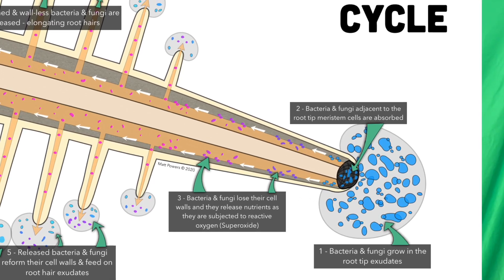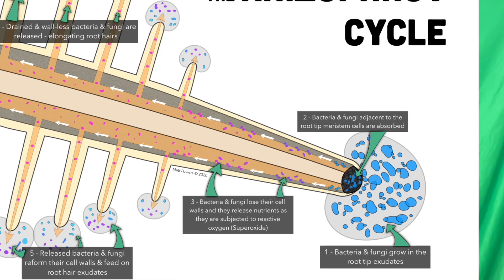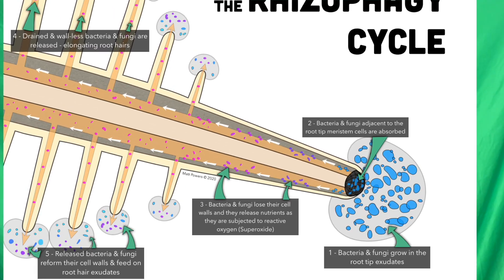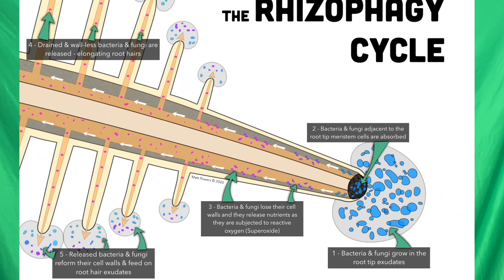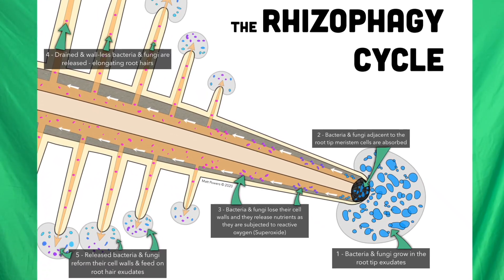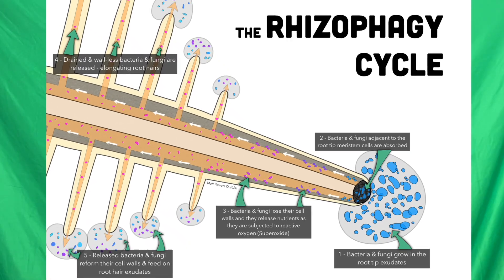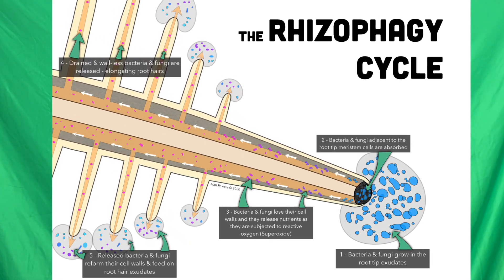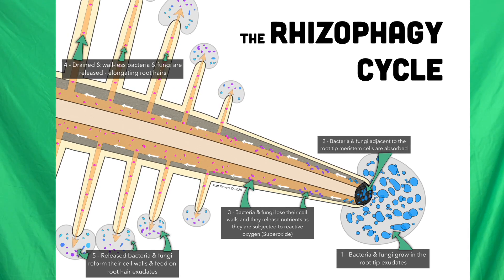Not all of them are released — some help the root hairs grow. Exudates and endophytes are taken in and released, included inside the plant root, all at the same time. This release and re-uptake is a breathe-in and breathe-out kind of motion. So rhizophagy is this amazing concept where plants are actually feeding on microbes.